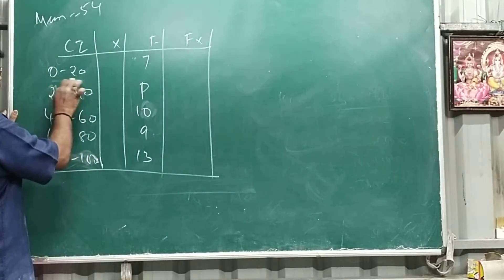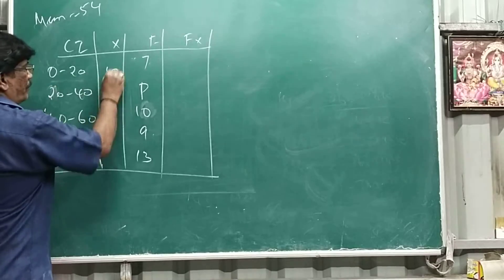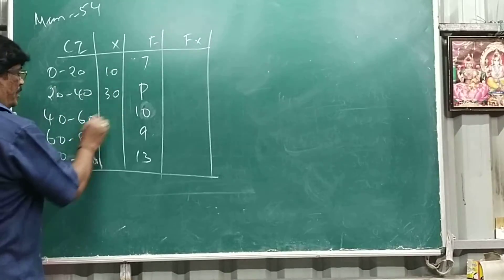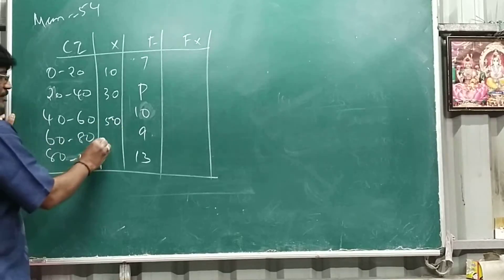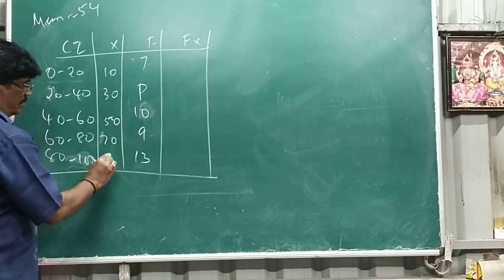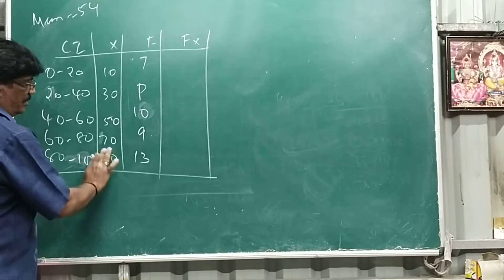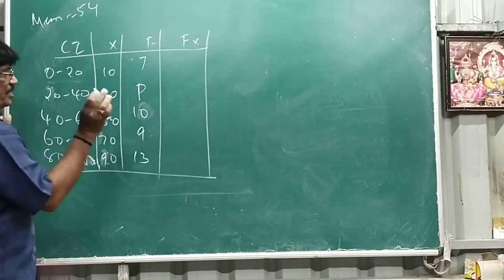So first mid-value, see 20, 0 plus 20, 20 by 2 is 10. 60 means 30, 100 means 50, this is 120, 70, this is 90. So you can see easily the difference is 20 each, you can easily see.